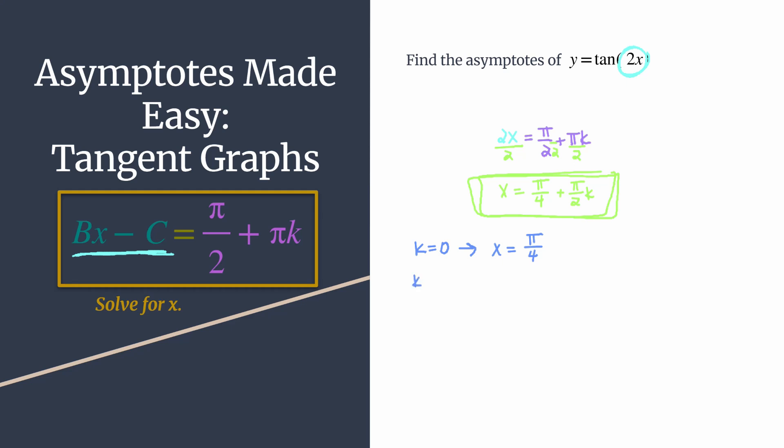All right, so you wanted to find another one just to the right of that one. You would plug in k = 1. So just showing that really quickly, we have x = π/4 + (π/2)(1). To add that together, you just need a common denominator of 4. So rewrite π/2 as 2π/4, and then add. So π/4 + 2π/4. There's another asymptote at x = 3π/4.